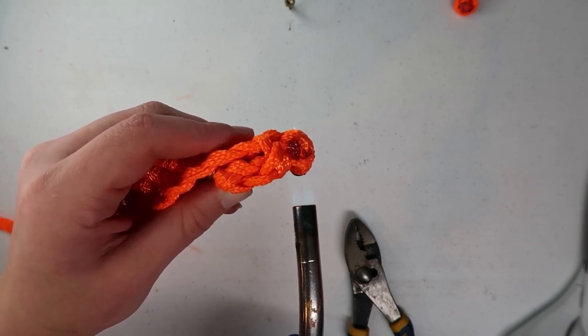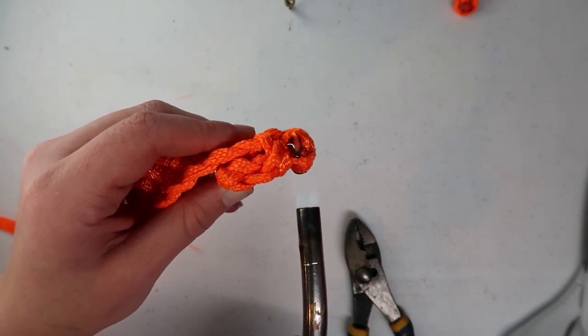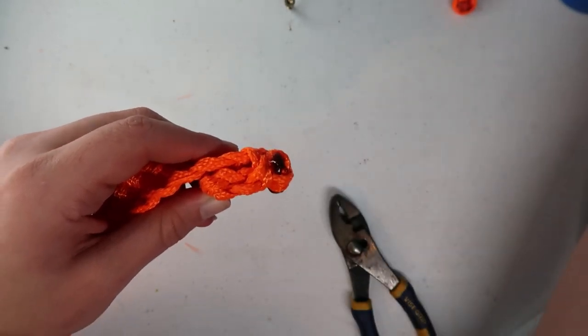So after you've melted it down a little bit, you're going to want to push it down and smooth it out. I like to use a wider set of pliers for this because the rope does cool down pretty fast.